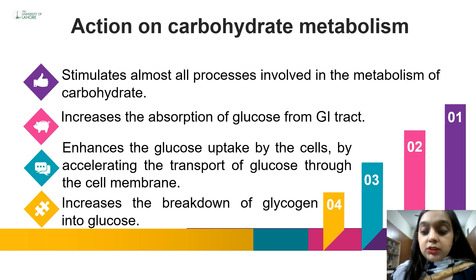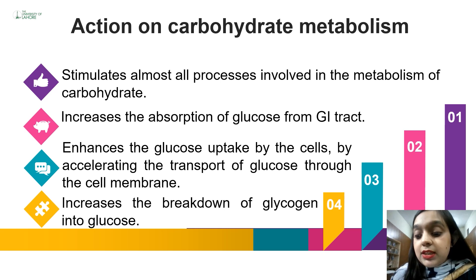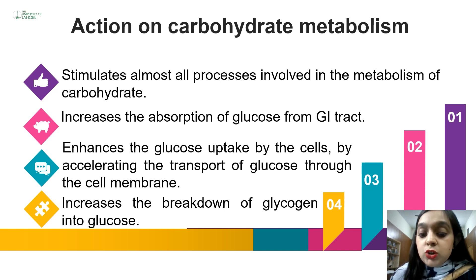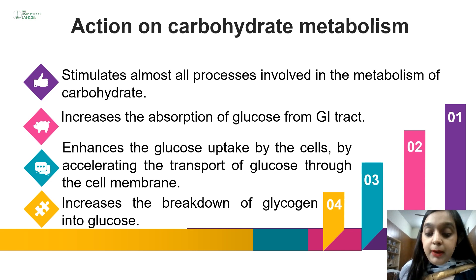Thyroid hormone is involved in stimulating all processes of carbohydrate metabolism. Starting from absorption of glucose from the GI tract, thyroid hormone increases the uptake of glucose from intestinal cells and enhances glucose uptake by cells by accelerating transport of glucose through the cell membrane. It increases glycogen breakdown into glucose, enhances glycolysis, increases gluconeogenesis — energy production from non-carbohydrate sources — and also involves insulin production through secondary mechanisms.